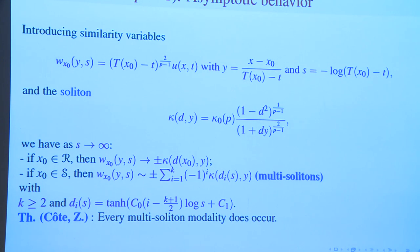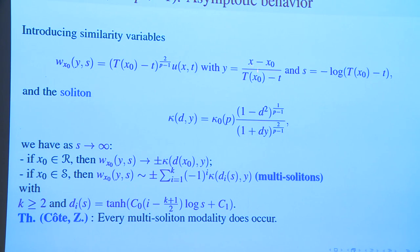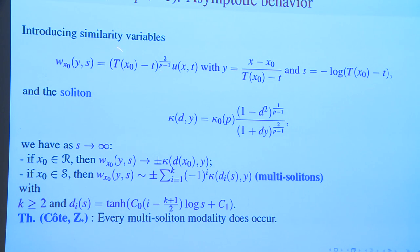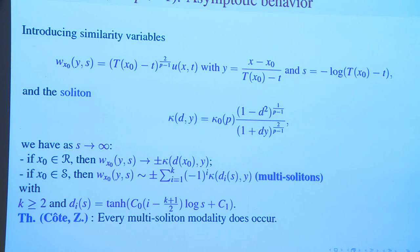The zoom has x minus x0 to the power 1 and capital T minus t to the power 1, unlike the heat equation where we have a square root because space and time do not play the same role. For the new function W, we simply divide u by the rate of the ODE. So we ask: can we compare the growth of the solution of the PDE to the growth of the ODE, which is explicit?